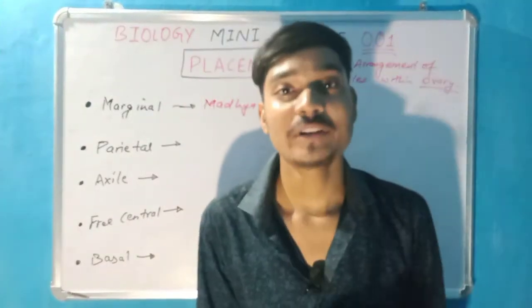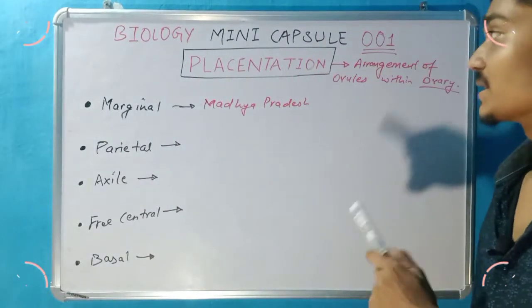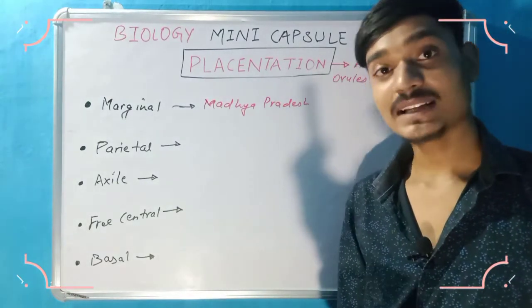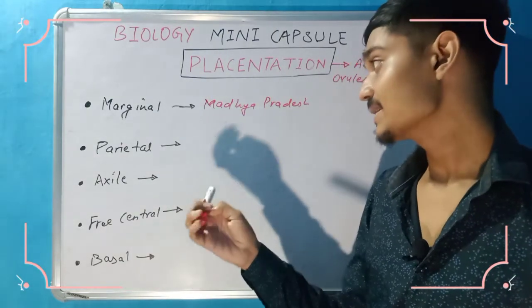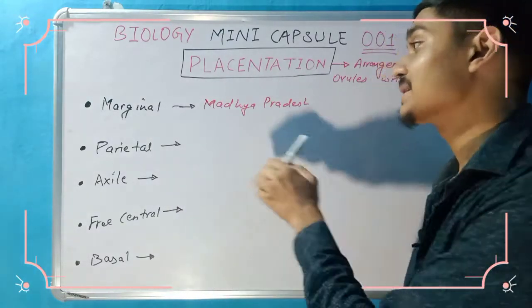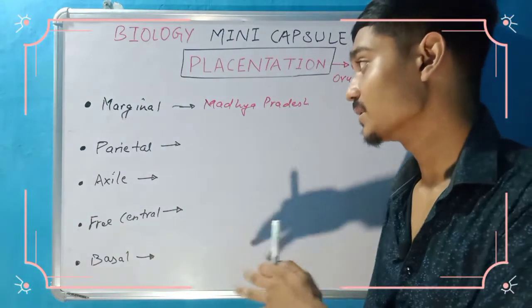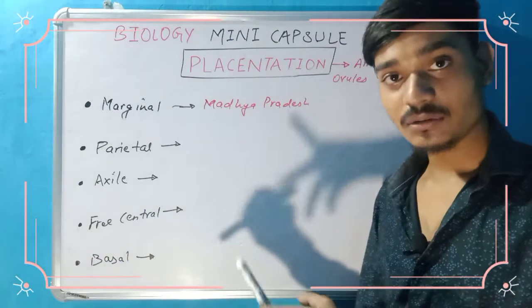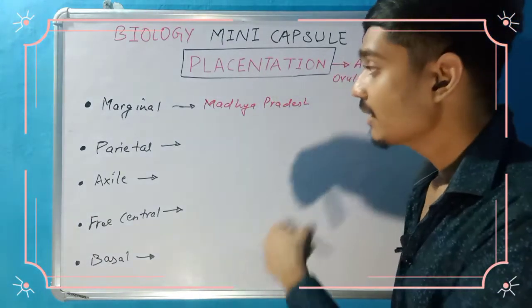Hello guys, welcome to our YouTube channel. In this video, I have taken the short tricks to remember the placentation. Placentation is a small topic of the class 11 biology chapter, morphology of plants. This is a very important topic, and from this topic, there are questions in CBC every year. The most important thing is the examples, which we never remember. So I have made a very good trick, which I showed a short view of at the start of the video, and here I will explain the trick.